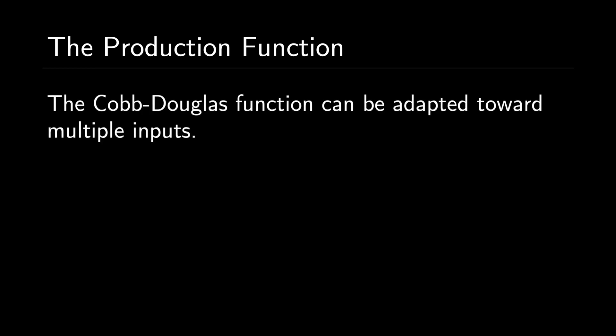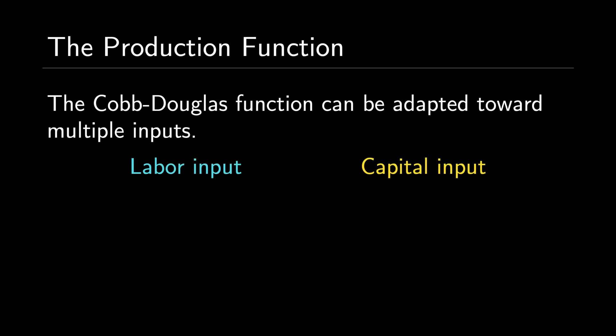Because the number of independent variables in the Cobb-Douglas production function depends on the number of factors that go into producing a single good, there are many ways to represent the function. The most basic way is with two inputs: labor input, or person hours worked in a year, and capital input, a measure of all machinery, equipment, and buildings. Moreover, each input has a certain constant output elasticity, which is a percent change of output divided by the percent change of an input.